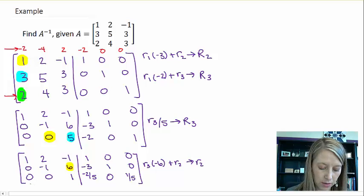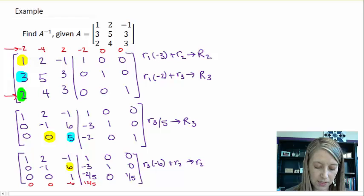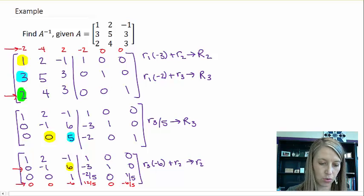And that becomes my new row 2. So let me do that scratch work down here. 0, 0, negative 6. Negative 2 fifths times negative 6 gives me positive 12 fifths. 0 and negative 6 fifths. So I'm adding these two rows.